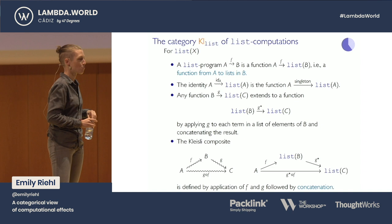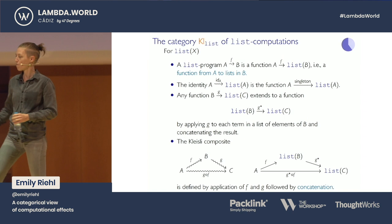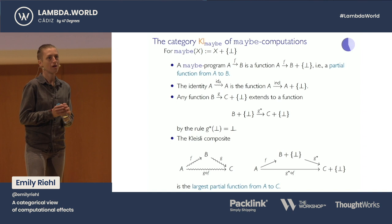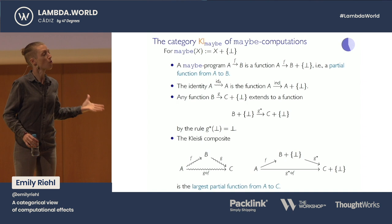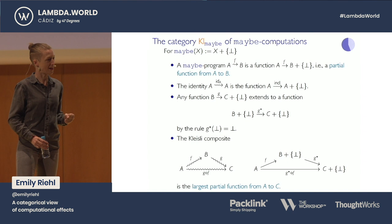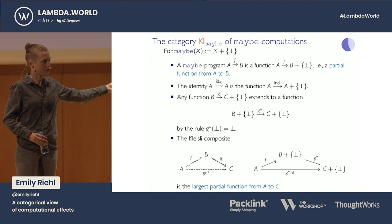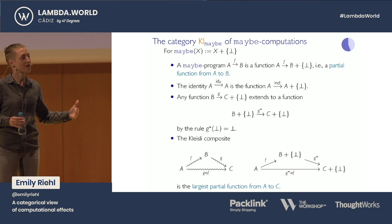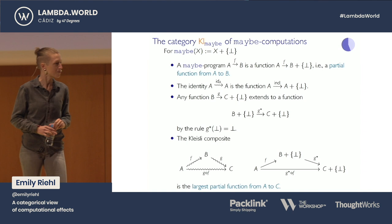Question: in the previous slide, you said the function from A to C was the largest partial function — but why is it partial? Isn't it defined for all of A? In the category of maybe programs, a maybe program is a total function from A to the disjoint union of B with a new failure element. A mathematician would refer to a total function from A to B-union-fail as a partially defined function from A to B — encoding the same idea in different language.